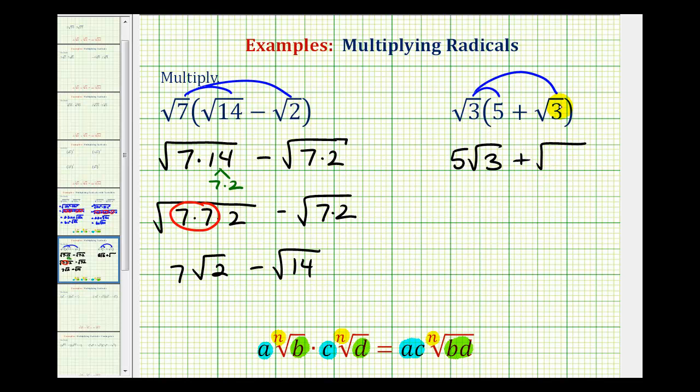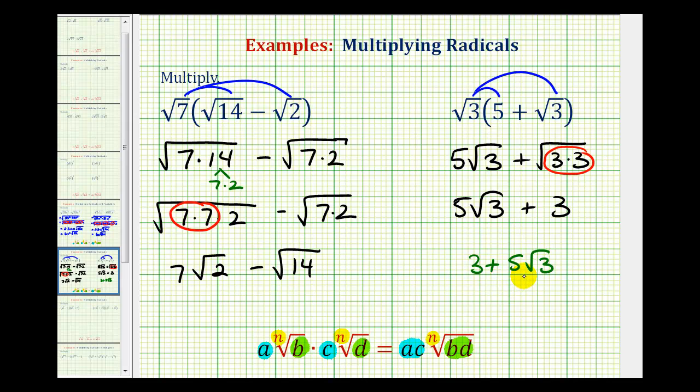Plus square root three times square root three would be the square root of three times three, which is a perfect square and therefore simplifies. So we have five square root three plus three, which if we wanted to, we could write as three plus five square root three, because of the commutative property of addition.